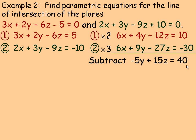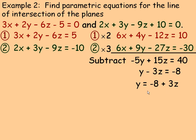Everything is divisible by negative 5, so dividing by negative 5 gives a positive coefficient for y. Rearranging, we solve for y: y equals negative 8 plus 3z. So we've eliminated x from both equations and solved for y in terms of z. When we eliminate y next, we'll solve for x in terms of z as well — the same variable — to keep the parametric form consistent.